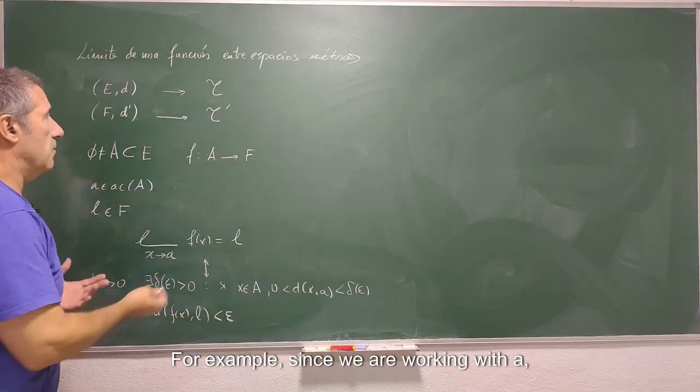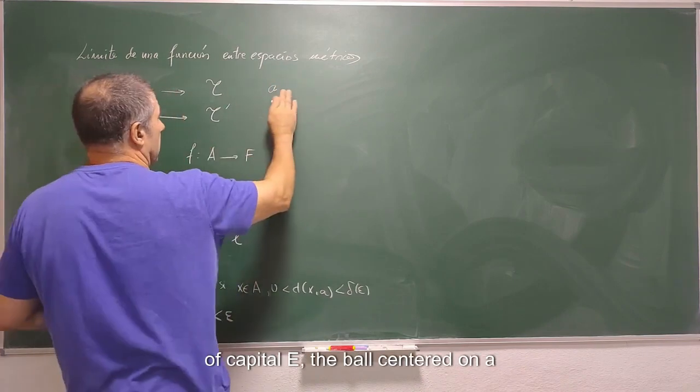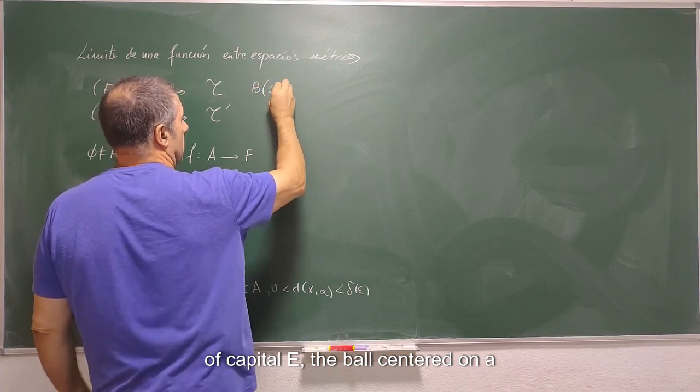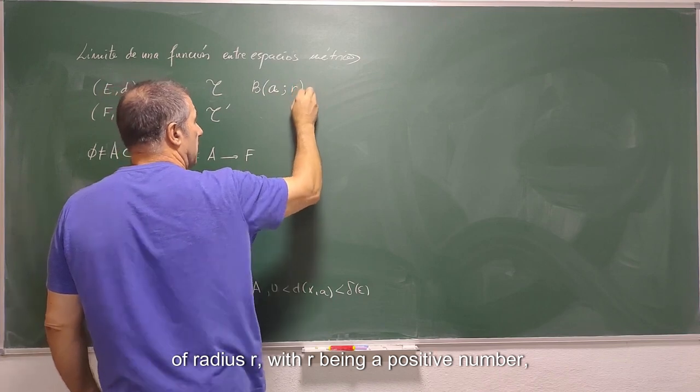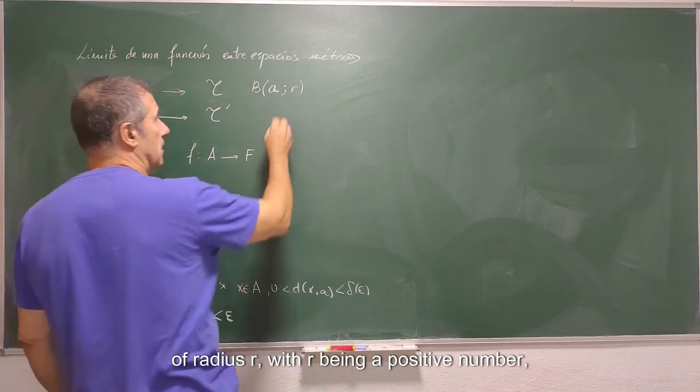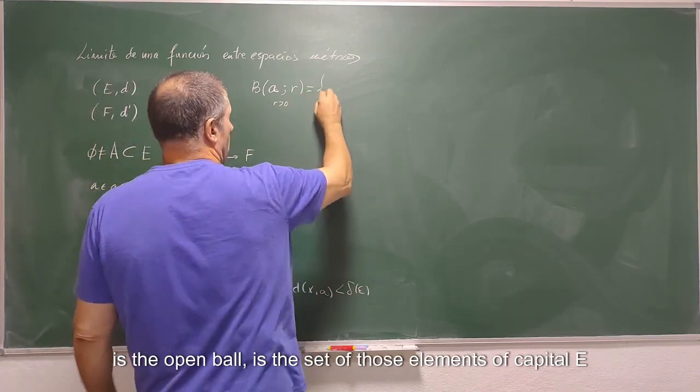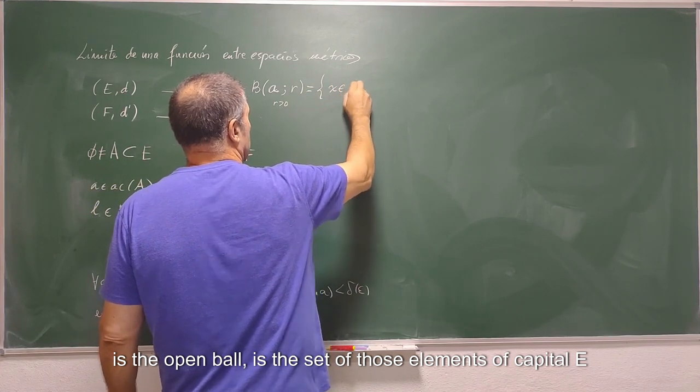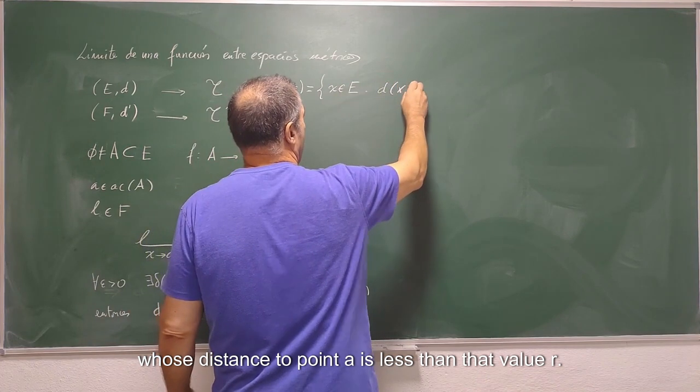For example, since we are working with A, if we take a point lowercase a of capital E, the ball centered on a of radius R, with R being a positive number, is the open ball, is the set of those elements of capital E whose distance to point a is less than that value R.